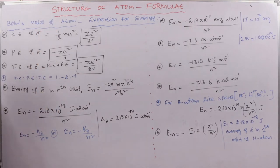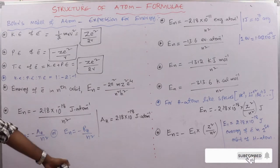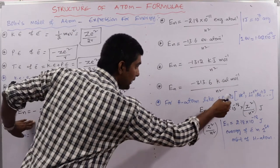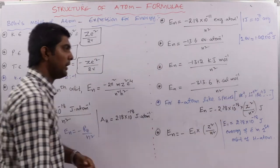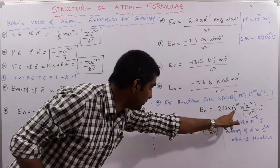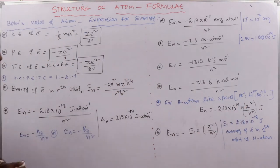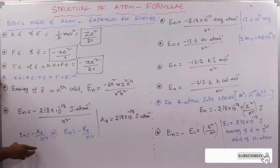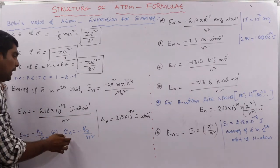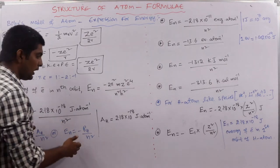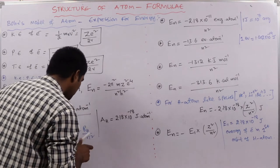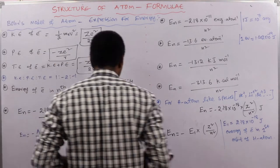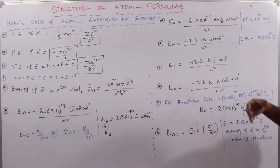For hydrogen-like species (He⁺, Li²⁺, Be³⁺): En = −2.18 × 10⁻¹⁸ × Z²/n² joules per atom. This can also be written as En = −RH/n², where RH = 2.18 × 10⁻¹⁸ joules per atom.